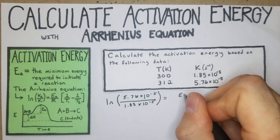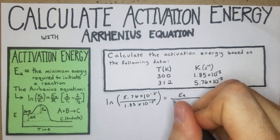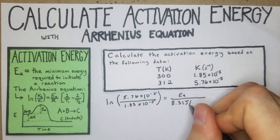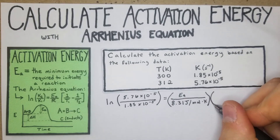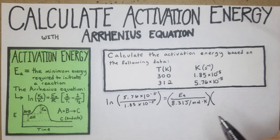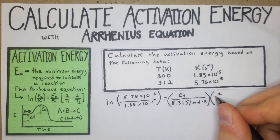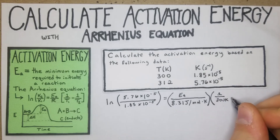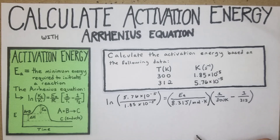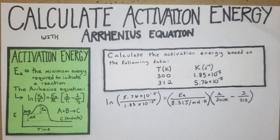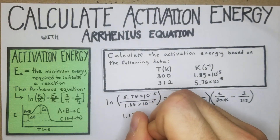That's going to equal Ea over 8.31 joules per mole·Kelvin — that's our R value. Then we have 1/T1 minus 1/T2, where K1 correlates to T1 and K2 correlates to T2. So we have 1/300 K minus 1/312 K. We just solve that. Because there are no variables on this side, that makes it convenient. We get 1.1358, and the bracket term evaluates to 1.28×10⁻⁴.